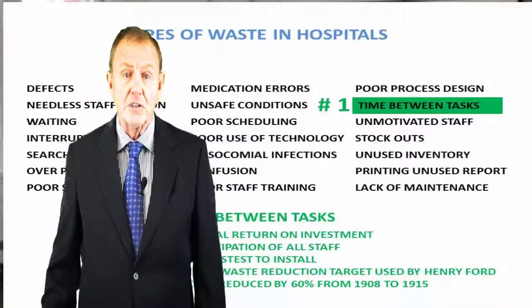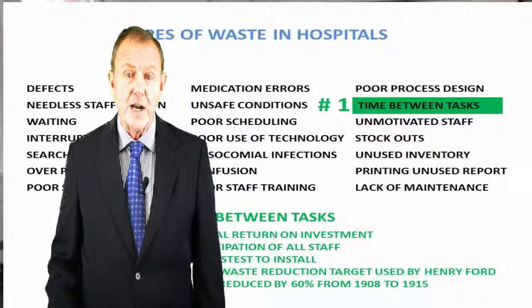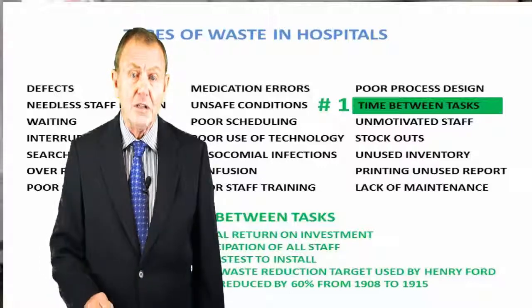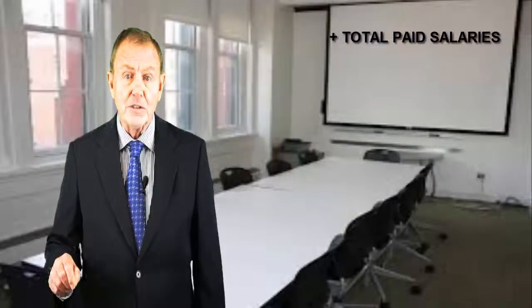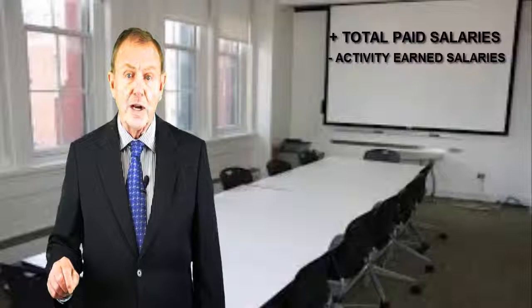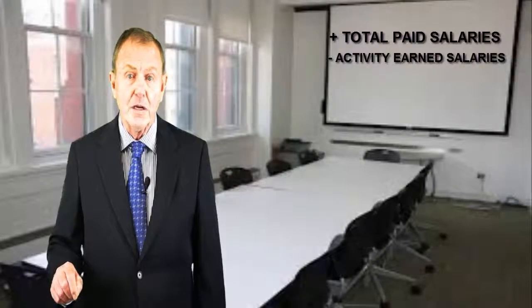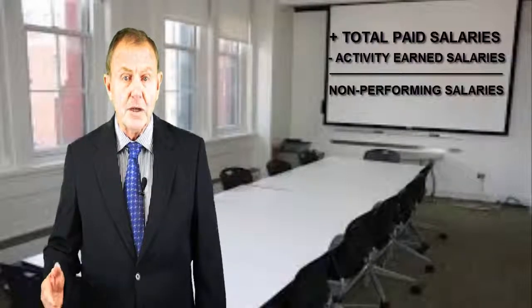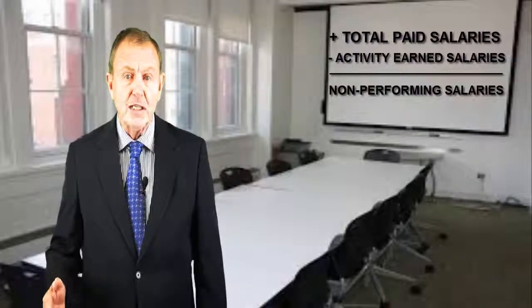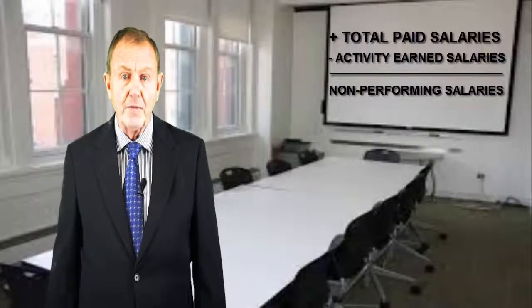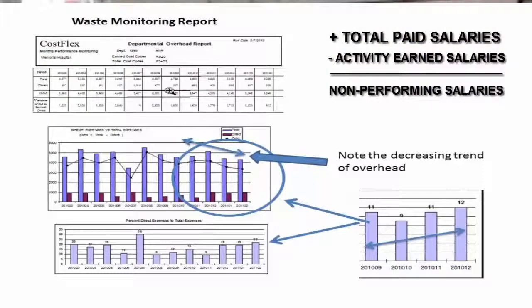The activity-based costing system compares direct salaries consumed by the activities to total paid salaries. The difference between the two is direct salary overhead, much of which is waste. The basic waste monitoring report is a graph of the last 12 months.